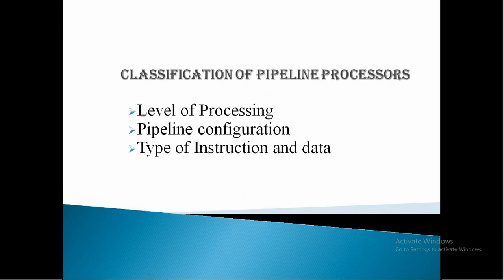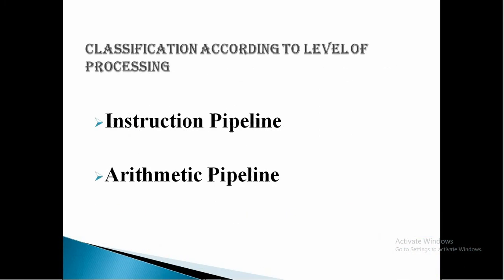Now, the classification of pipeline processors. This type depends on the following factors: level of processing, pipeline configuration, and the type of instruction and data. According to the level of processing, computer operations are classified as instruction pipeline and arithmetic pipeline.